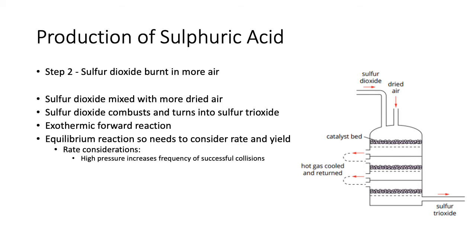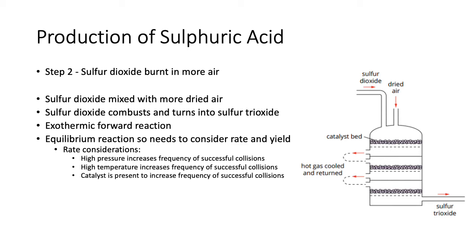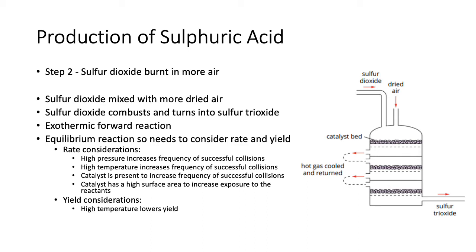What rate considerations do we have? We have a high pressure to increase the frequency of successful collisions, a high temperature, and a catalyst. The catalyst beds are present, with catalysts in little tiny pebble form to have a high surface area. For yield considerations: because it's an exothermic reaction, high temperature lowers yield, so you want a lower temperature. High pressure increases the yield, so you want a high pressure.